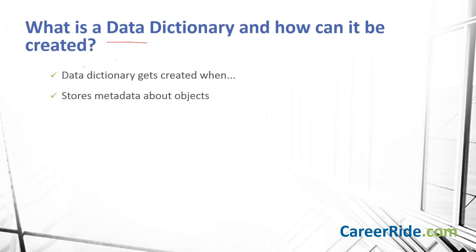What is a data dictionary and how can it be created? Whenever a new database is created, a database-specific data dictionary gets created by the system. The data dictionary is where Oracle stores metadata about objects in the database. You can think of it as the set of tables that keep track of your tables, indexes, and other objects. For example, when you create a table, the table name, column names, types, table space, and more are stored in the data dictionary.